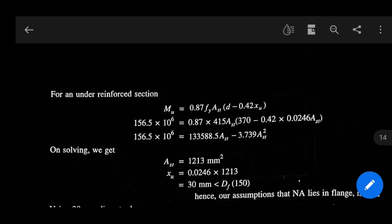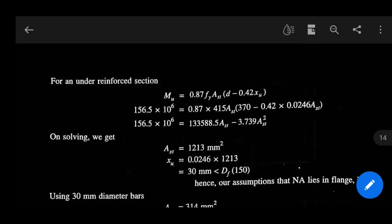So here, MU is 156.5 into 10 to the power 6 equals 0.87 into 415 AST within bracket 370 minus 0.42 XU into 0.0246 AST. So from this we can write 156.5 into 10 to the power 6 equals 133588.5 AST minus 3.739 AST square. By solving it, we get AST equals 1213 mm square.